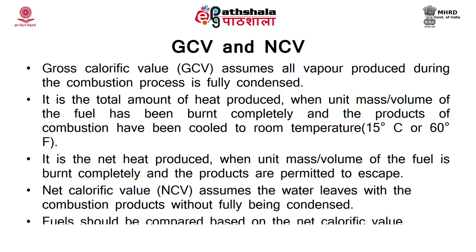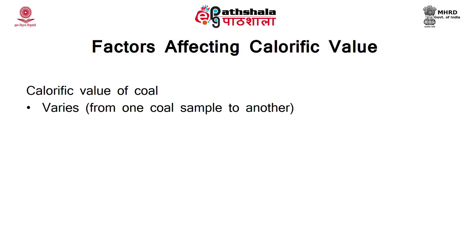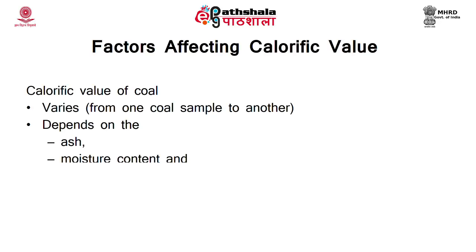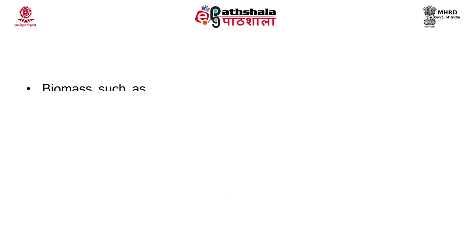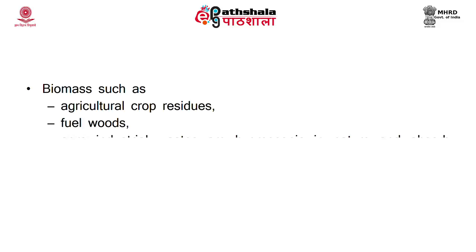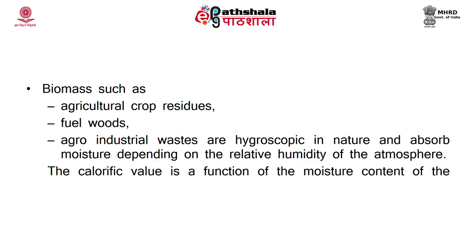Fuels are mainly compared based on the net calorific value rather than GCV. Factors affecting calorific value: it varies with the substrate or fuel sample. For example, calorific value of coal varies depending on ash content, moisture content, and type of coal. The calorific value of fuel oils are more or less consistent. Biomass such as agricultural crop residue, fuel wood, and agro-industrial waste are hygroscopic and absorb moisture depending on relative humidity, so their calorific value varies as a function of moisture content.